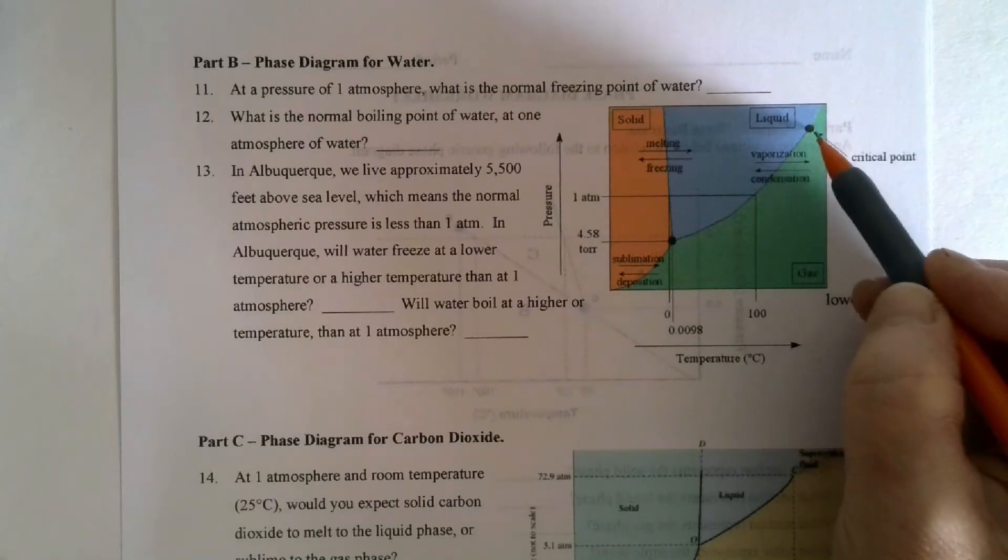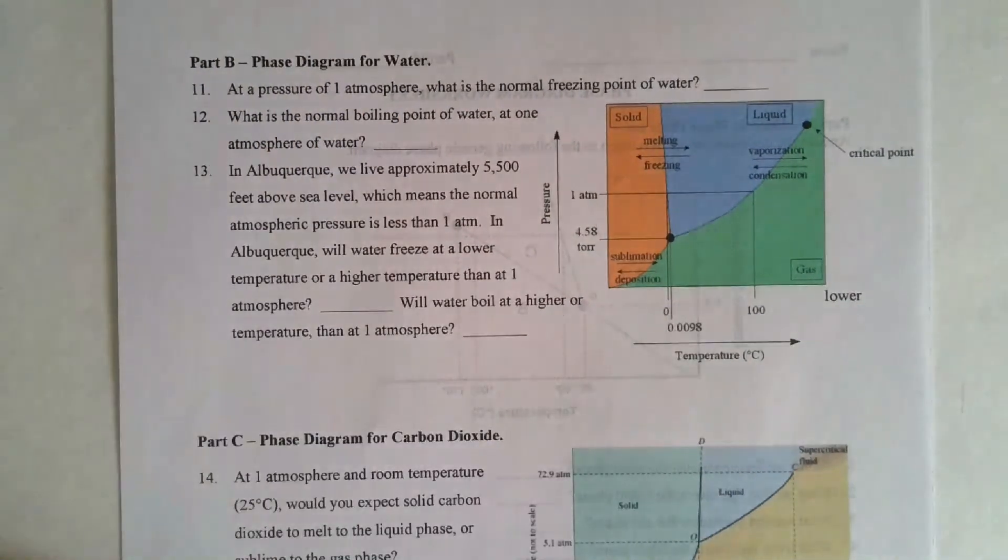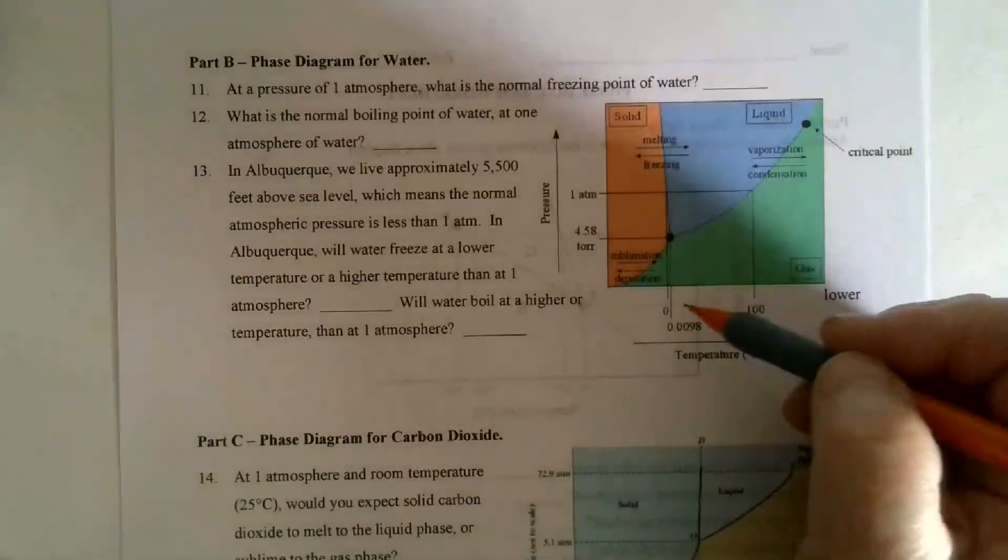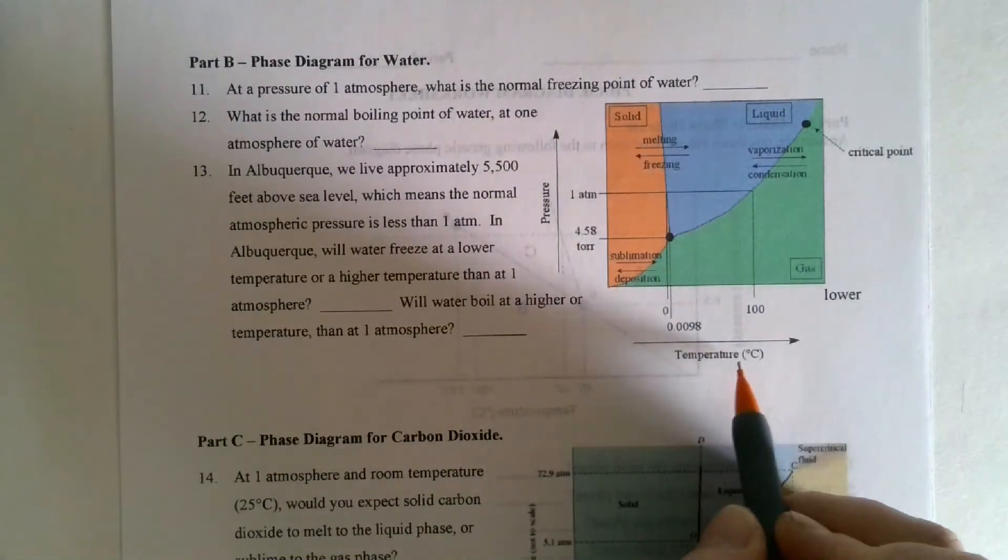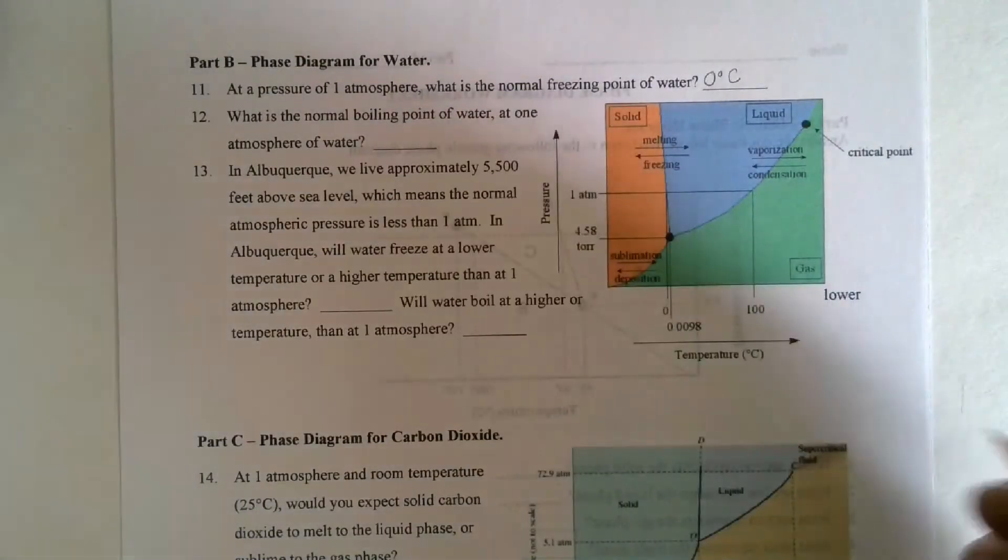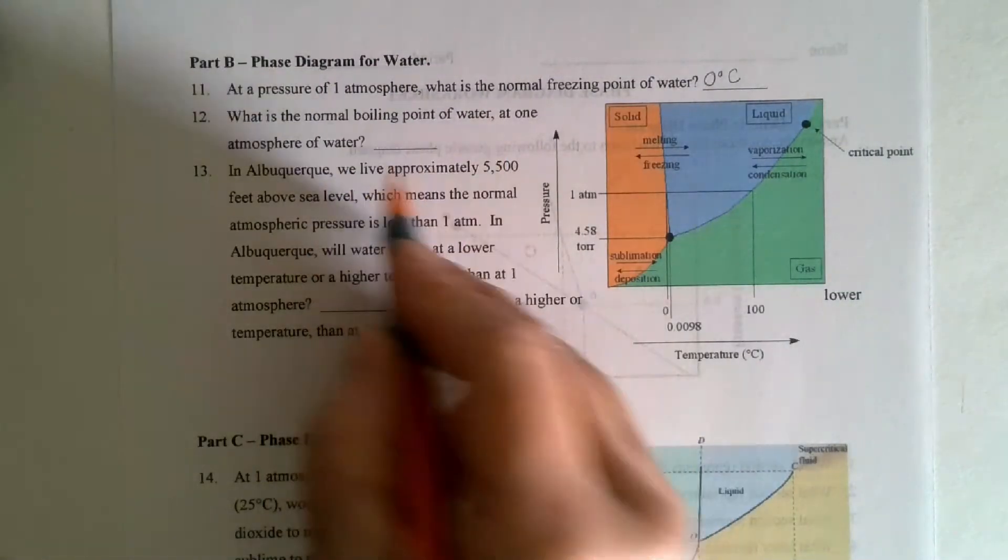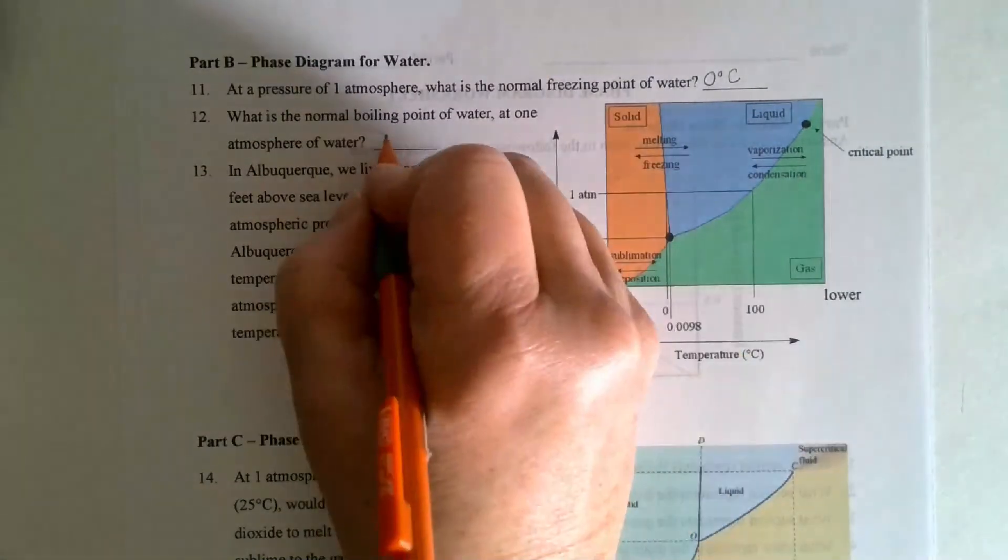So we look at this. At a pressure of one atmosphere, what is the normal freezing point of water? So we look at this, and we say, oh, and remember, this is in degrees Celsius. We would write zero degrees Celsius. What is a normal boiling point of water at one atmosphere? So we go over one. It says that it's 100 degrees Celsius.